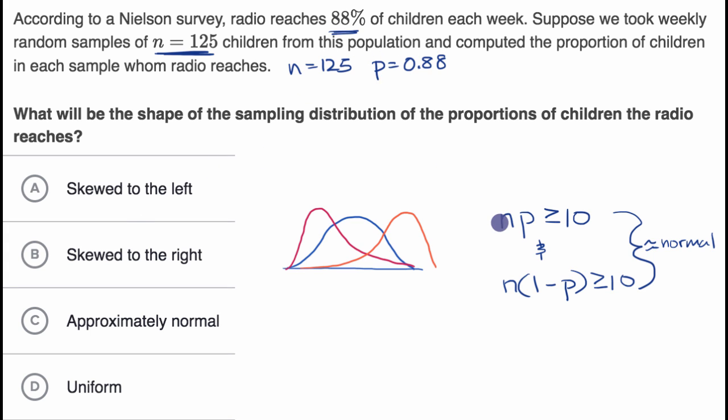So now let's calculate n*p. So n is 125 times p is 0.88. And is this going to be greater than or equal to 10? Well, we don't even have to calculate this exactly. This is almost 90% of 125. This is actually going to be over 100. So it for sure is going to be greater than 10. So we meet this first condition.